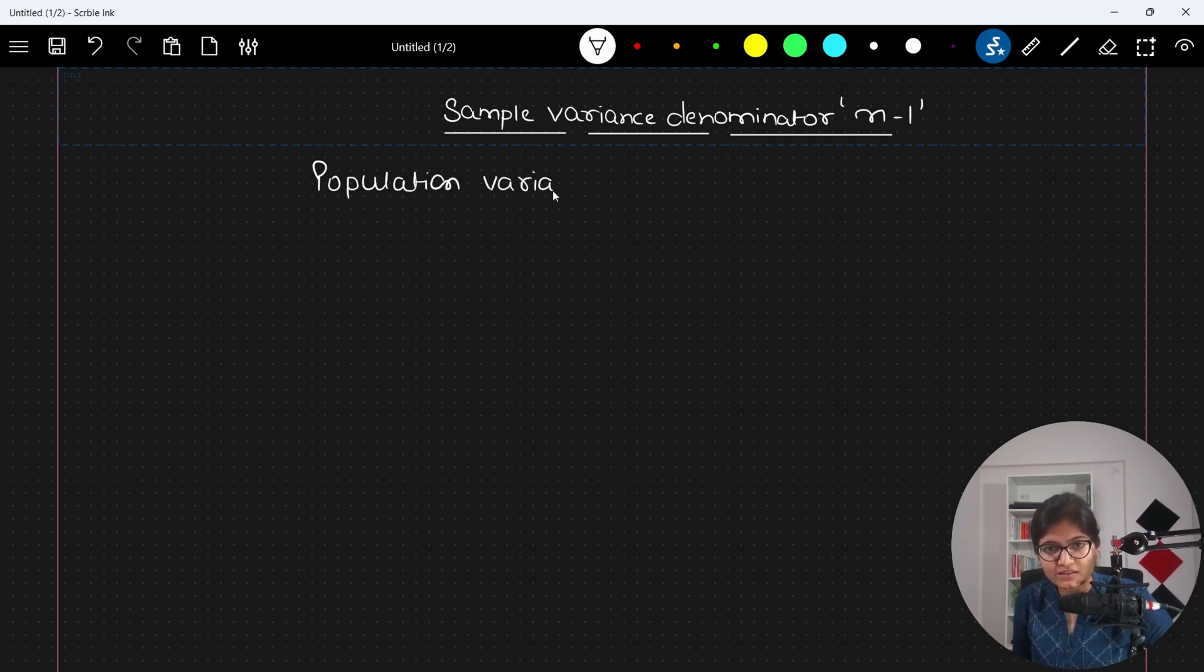So population variance is represented by sigma square, which is equals to summation of i equals to 1 to N, where N indicates how many number of observations that you have. Xi minus the value of mu, right? So with respect to mean you are subtracting it and then doing the square of that divided by capital N,